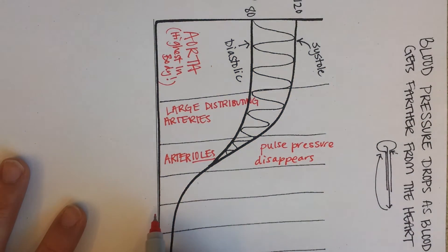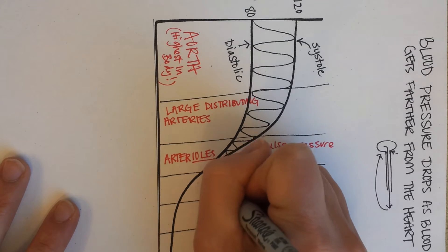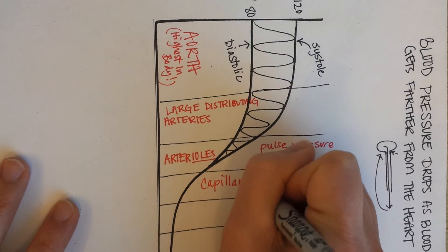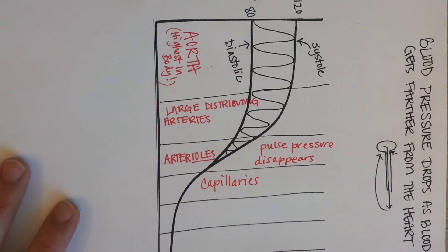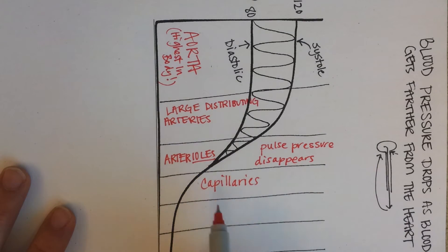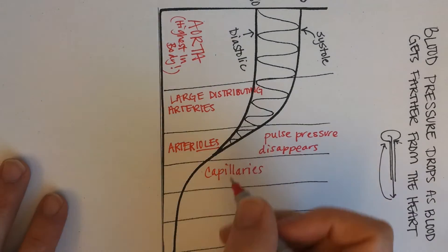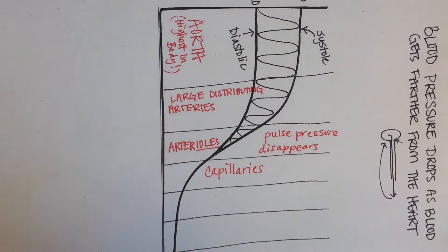So by the time you get to the tiny capillaries, pressure has gone way down. And there is no pulse pressure. So that's good because it means blood flow is always steady through the capillaries. Then the capillaries drop off the oxygen and other goodies at the tissue. They collect the waste products into veins. You can use a blue pen there.